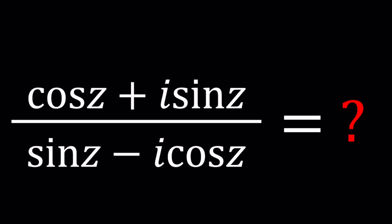We have cosine z plus i sine z divided by sine z minus i cosine z. I hope I haven't made this problem before because that looks somewhat familiar. Let's see how we can proceed with the solution. I'll be presenting at least two methods.